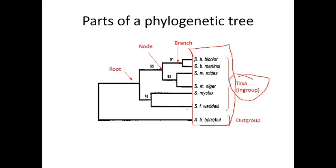Tree ke sabse end pe jo bhi organisms ke naam likhe hote hain, they are called taxa. The starting point of the phylogenetic tree where branching begins is called the root. From this root, branches diverge — do branch banti hain, phir unse aur do, aur ye jo changes ho raha hai — wo jo diverge ho raha hai usko branch kaha jata hai.